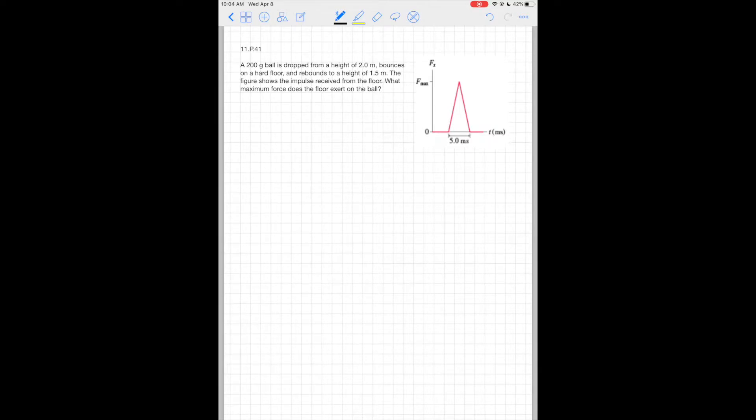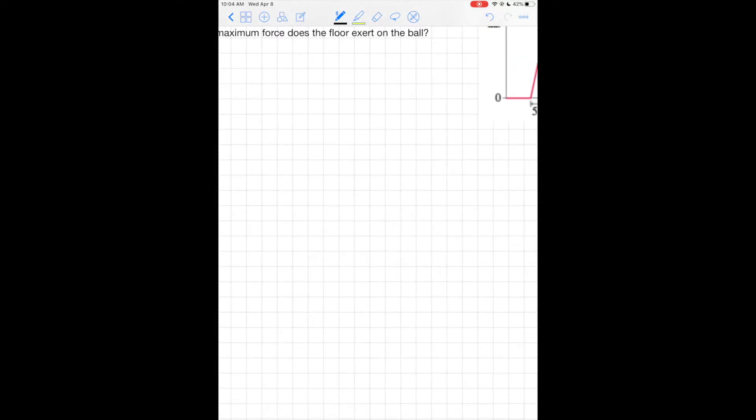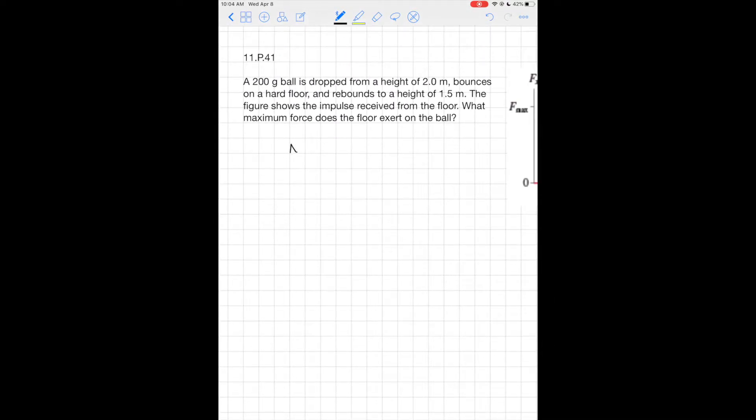So if we are non-isolated, what does that mean? It means that delta p is going to be equal not to zero but to the impulse, the total impulse from external forces.